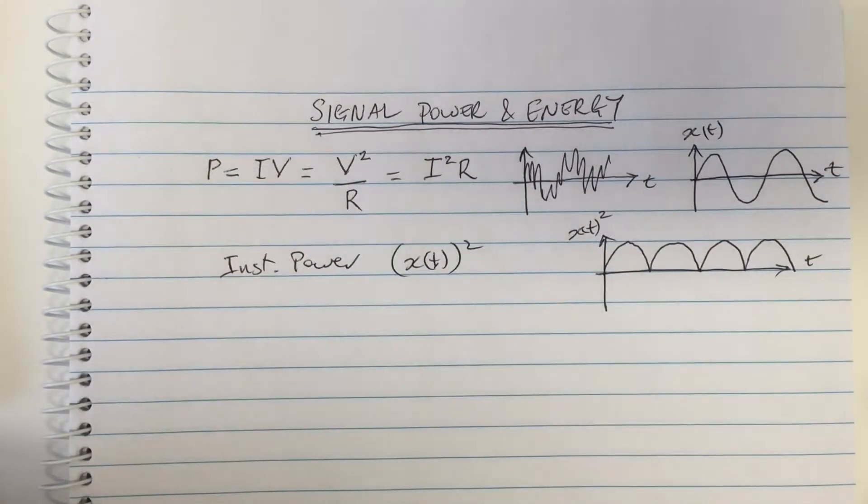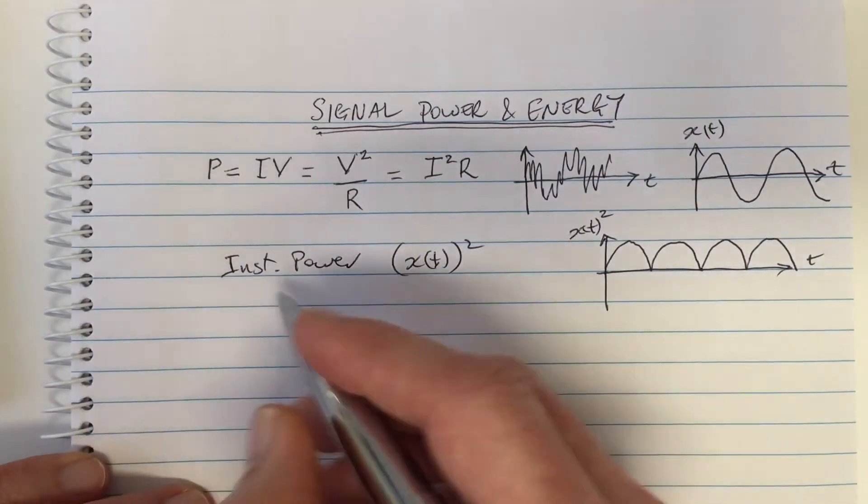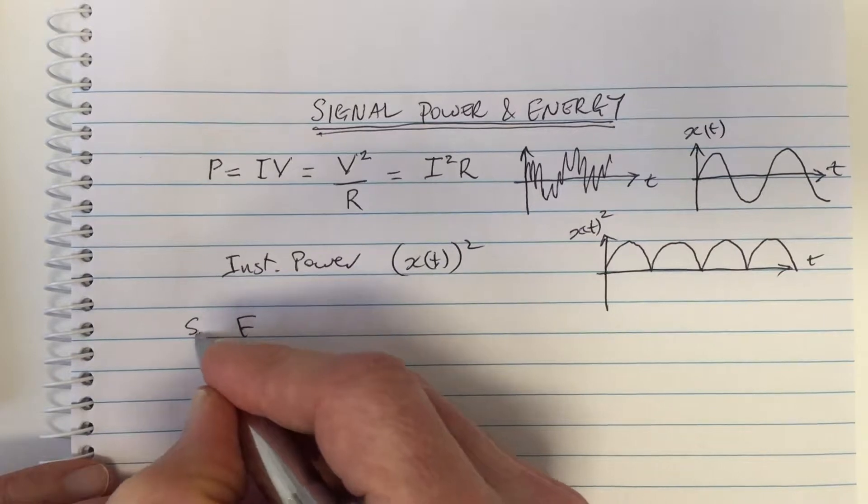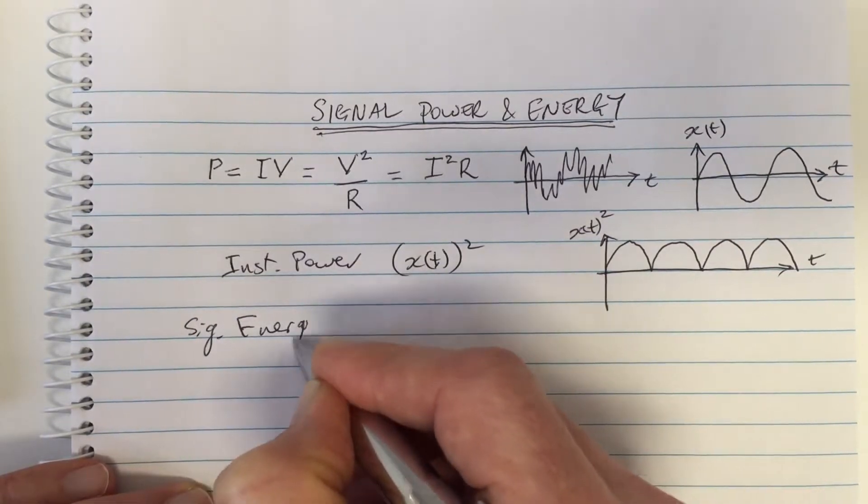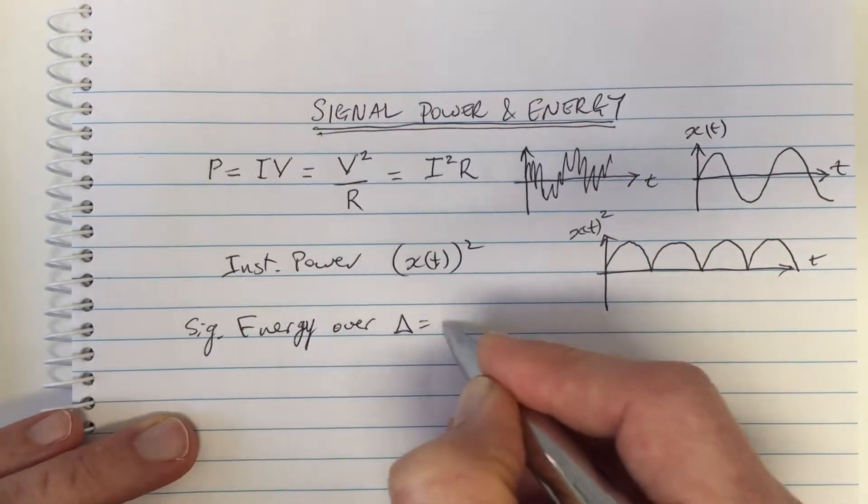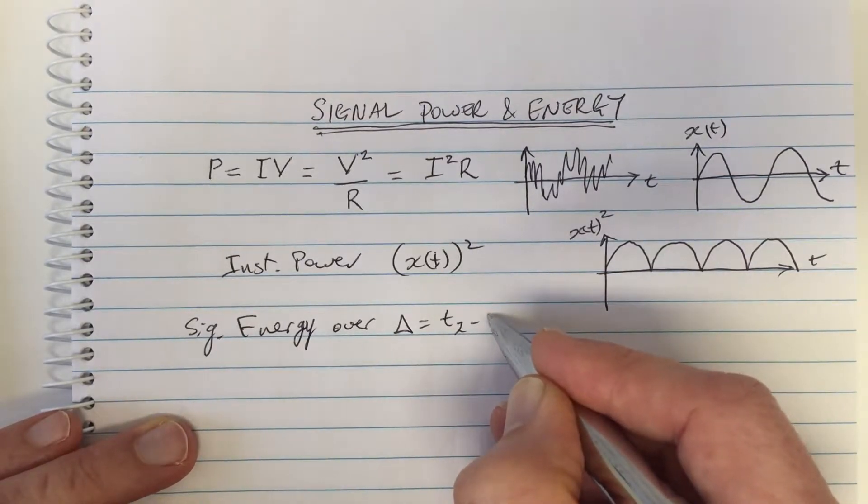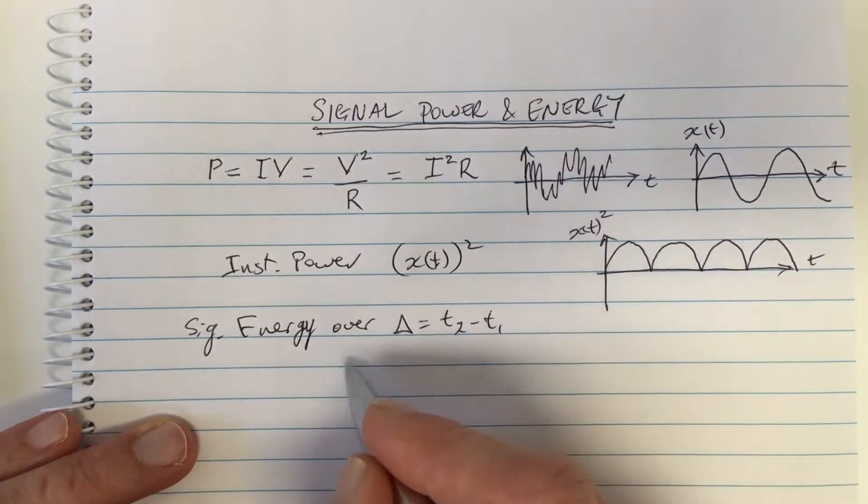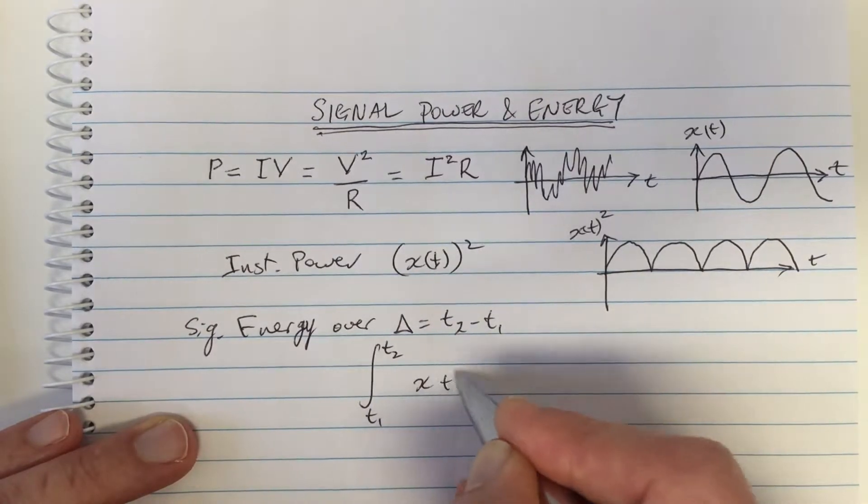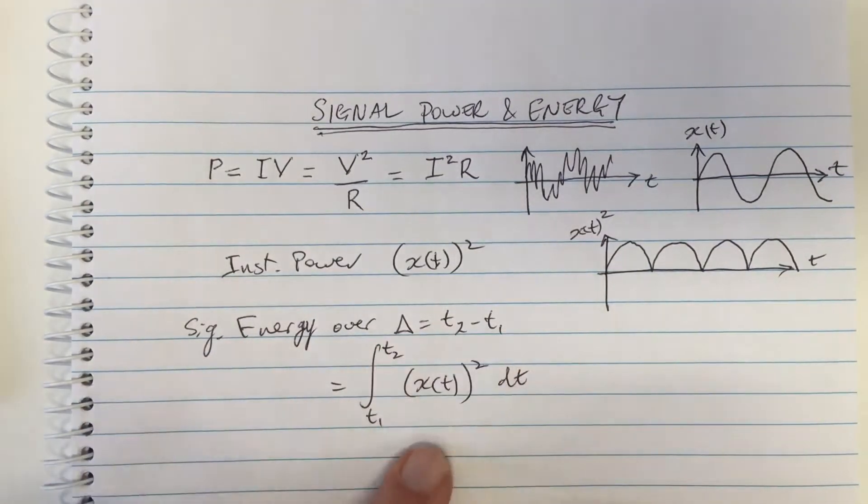Okay now energy is the addition of power over time. So we have the same concept in the signals. So energy is the integral, so signal energy equals, is over a period of time. Over a period of time let's say between t1 and t2, so it's over a delta period between t2 and t1. So this is going to equal in mathematical terms, integrate from t1 to t2 of x(t) squared. So this is the signal energy over a period of time.